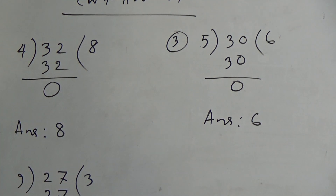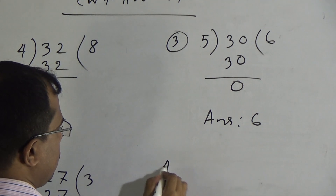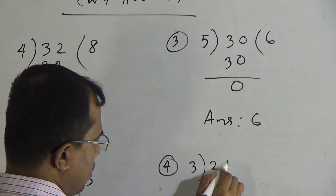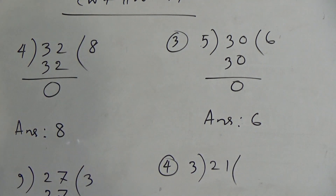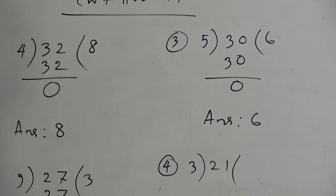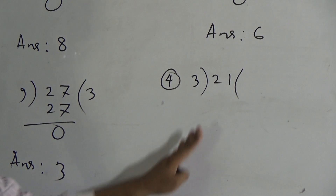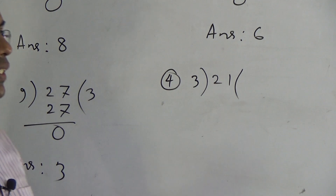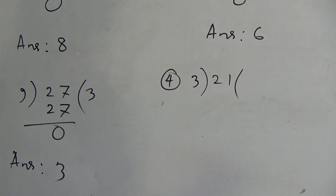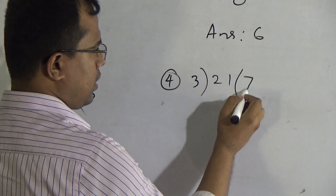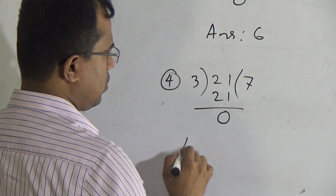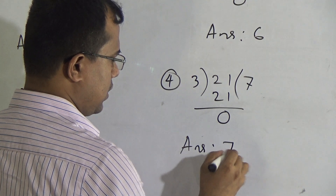Dear students, now we will do number 4: we will divide 21 by 3. We will count the times tables of 3: 3 zeros are 0, 3 ones are 3, 3 twos are 6, 3 threes are 9, 3 fours are 12, 3 fives are 15, 3 sixes are 18, and 3 sevens are 21. 7 times gives 21. After subtracting we will get 0, so the answer is 7.